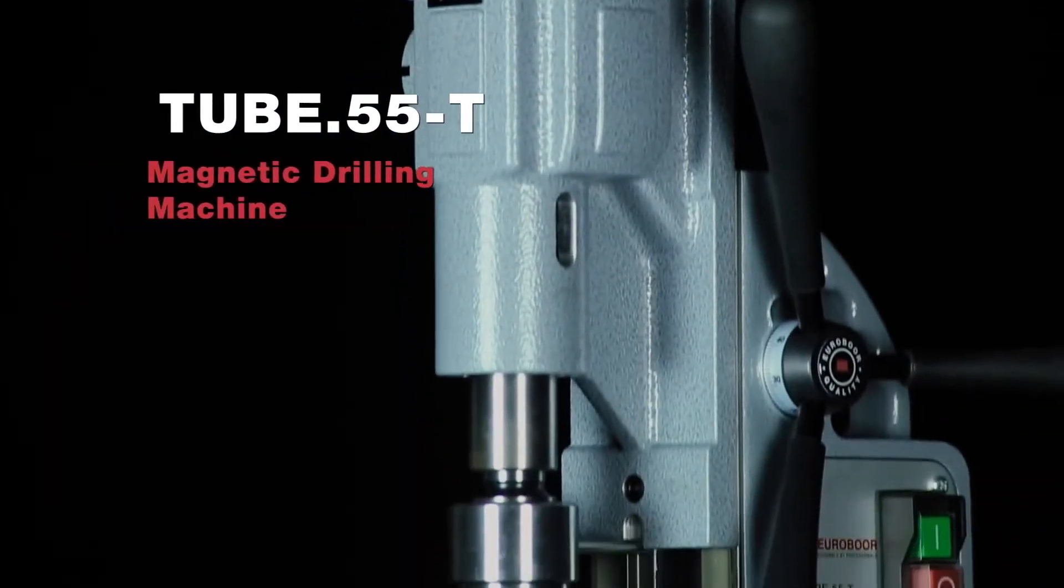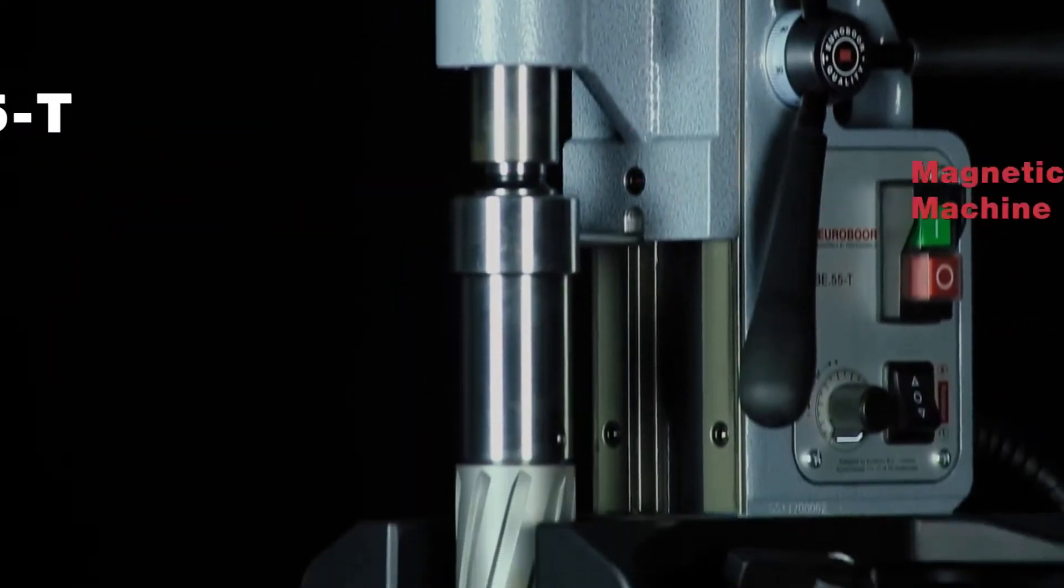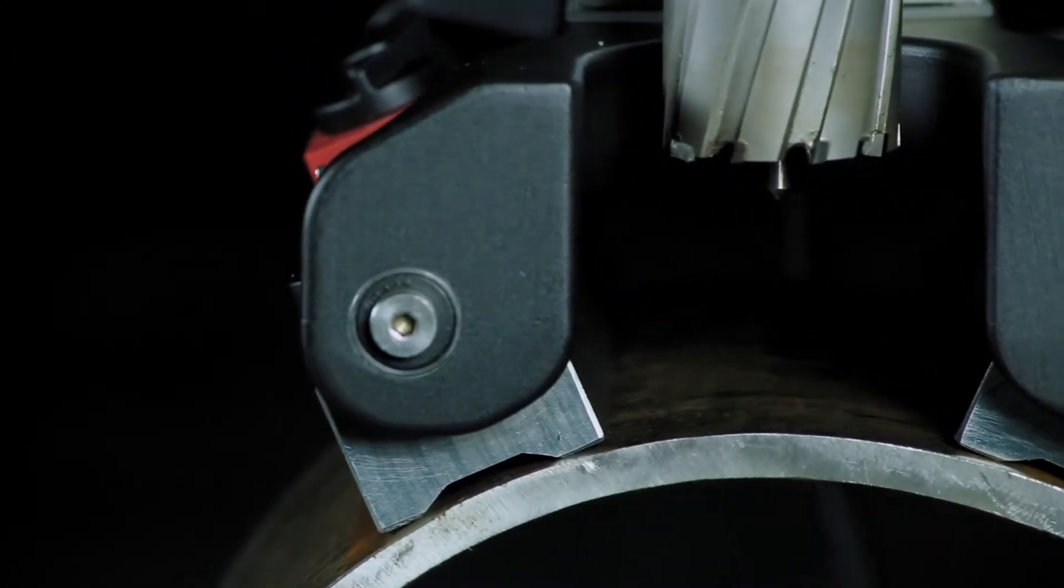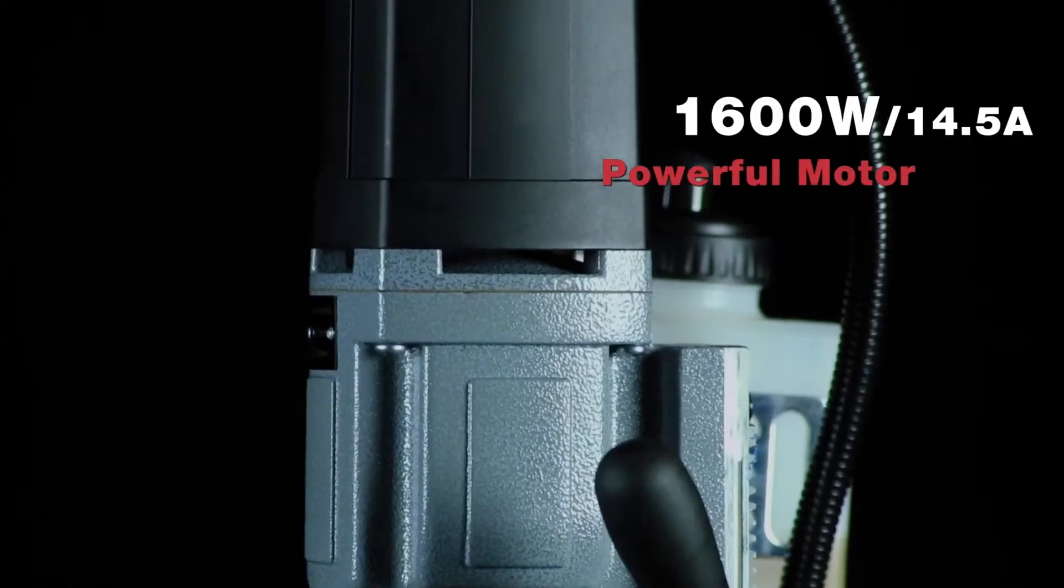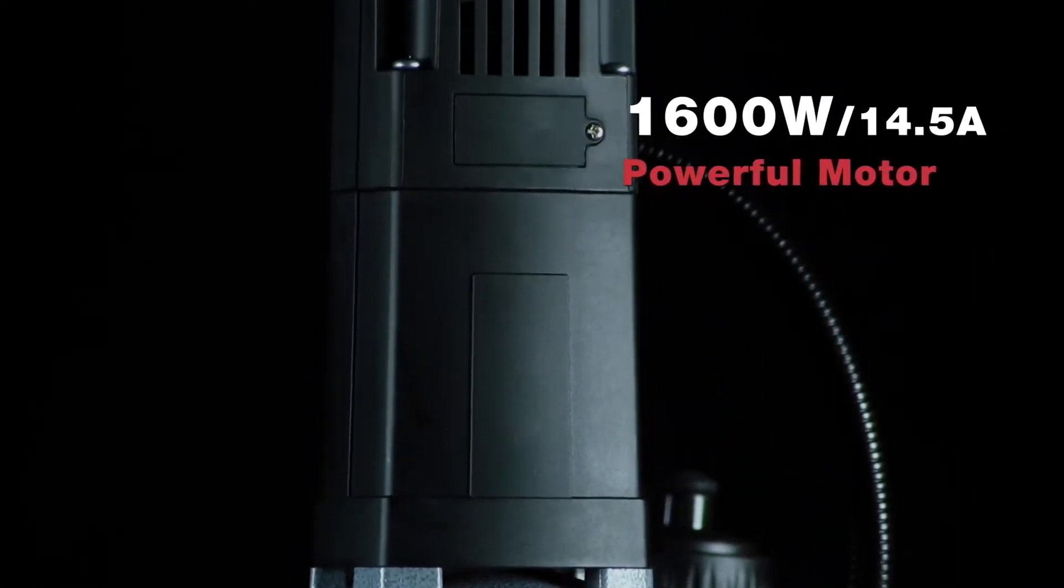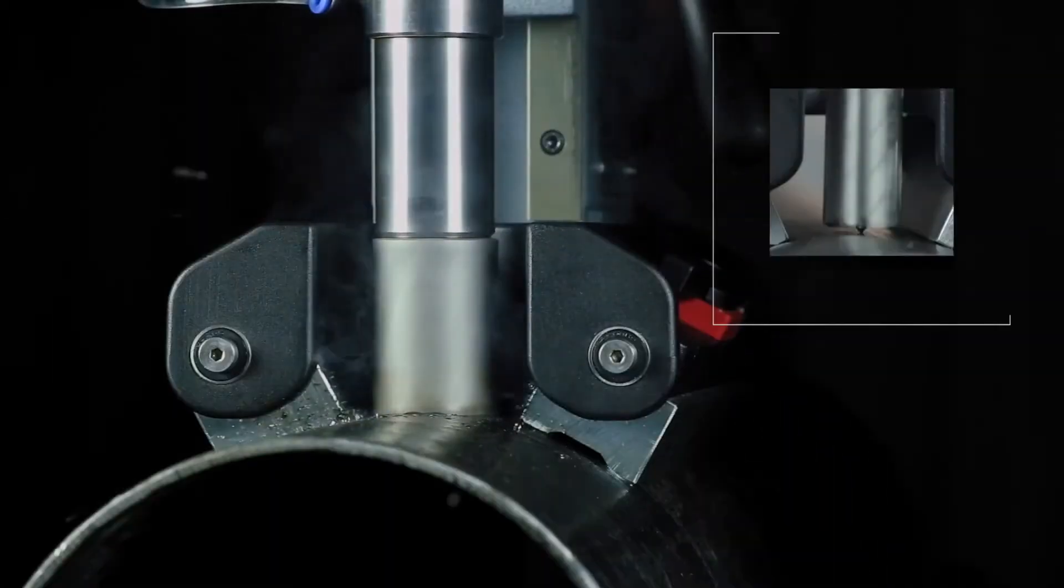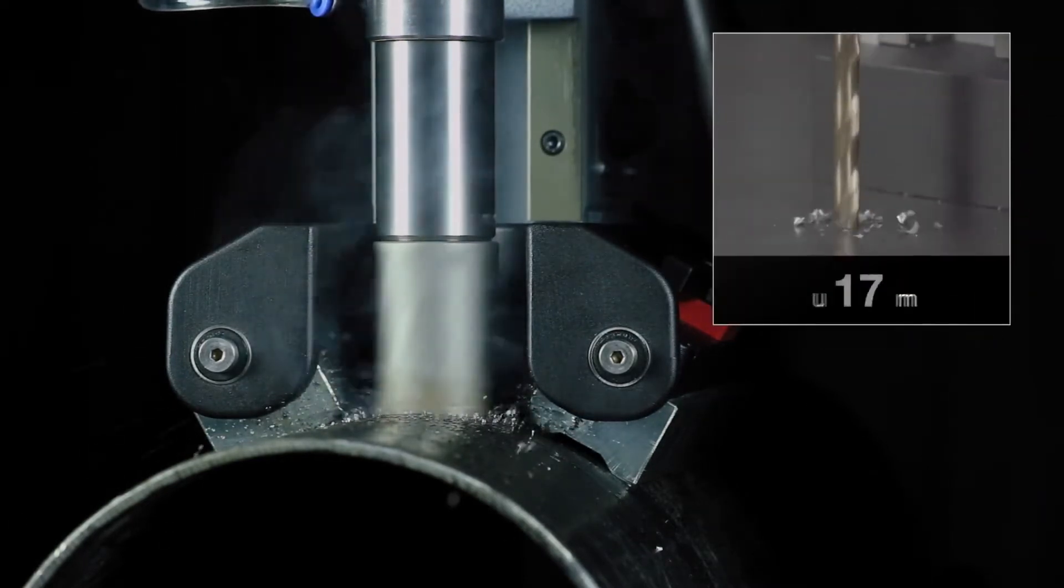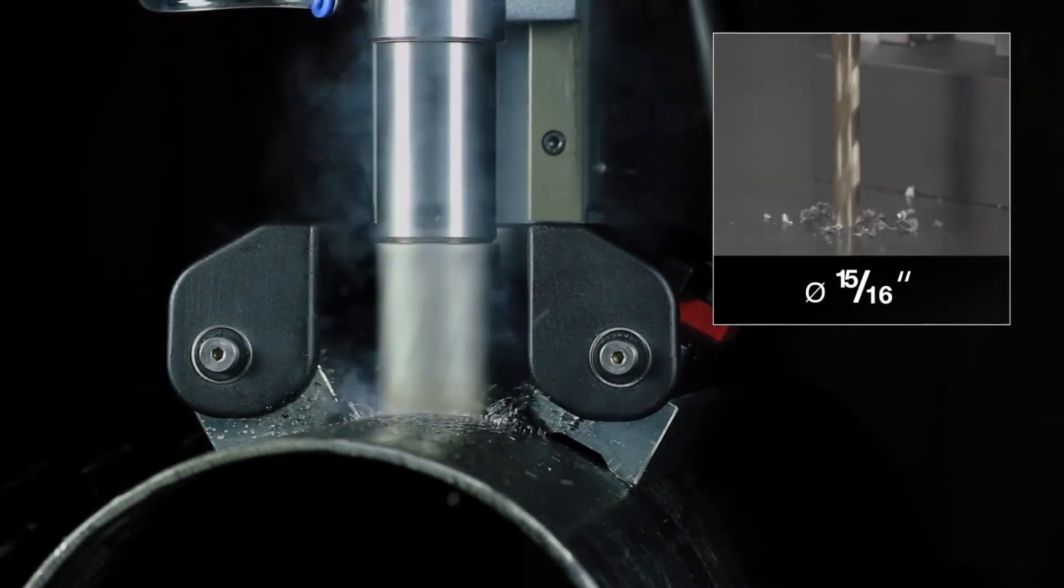Eurobore 2-55T, designed for pipe drilling and curved surfaces. Powerful motor of 1600 watts. Annular cutting up to 55mm diameter, twist drilling up to 23mm diameter.